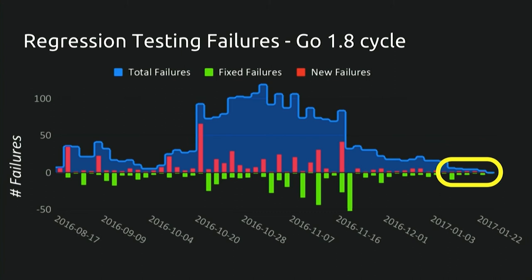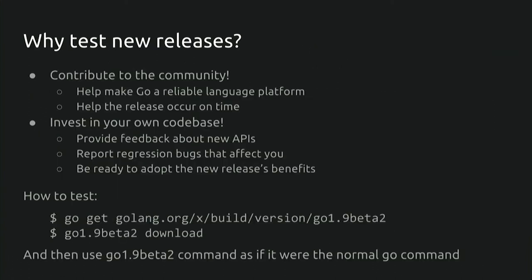I share about our regression testing process to show the Go team's commitment to make each Go release the best release. However, as large as our test suite is, it is still a tiny fraction of all the Go code in the world and is heavily tailored towards Google's Go code. Any code base of sufficient size will use Go in a way that is unique and that we did not test for. And for that reason, we need your help to test new releases of Go. By reporting regression failures, you can help Go become the most reliable language platform — one that users have confidence in. Also, reporting regressions early allows Go to be released on time so that all of us can benefit sooner from upcoming features.